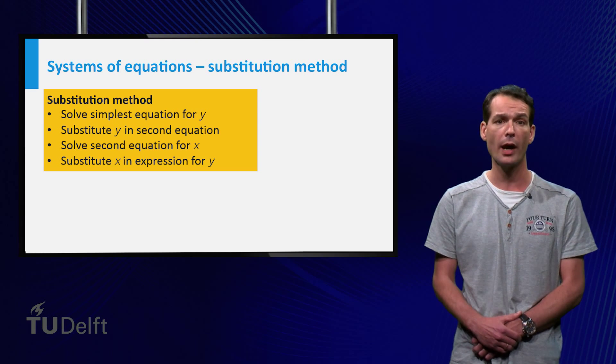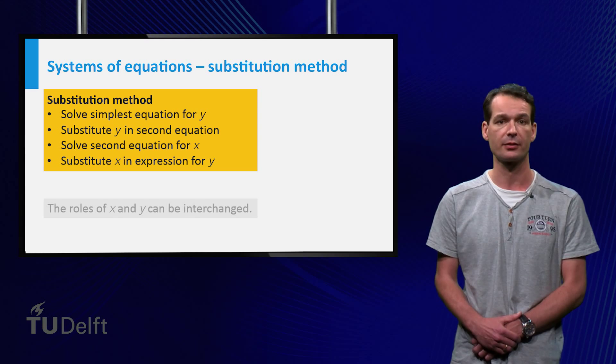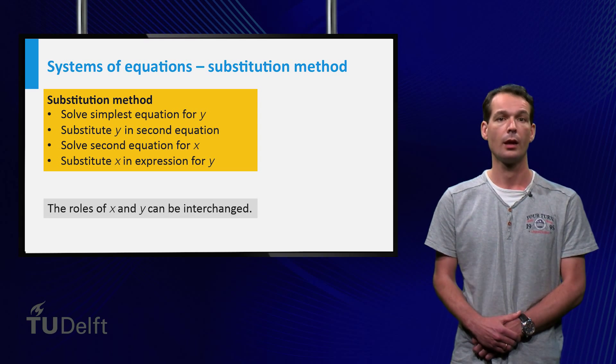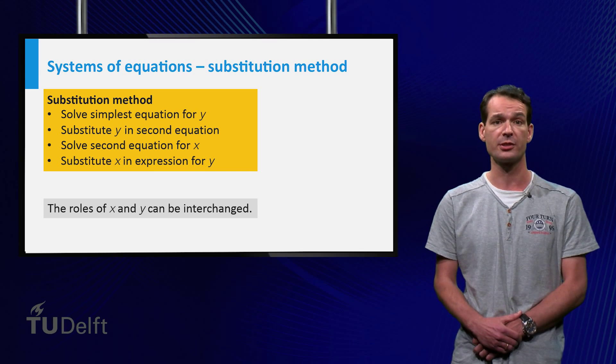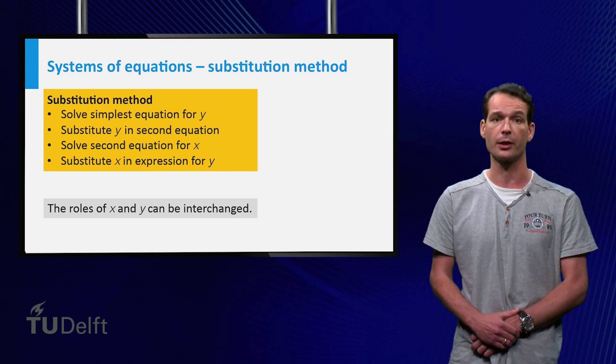Instead of first solving for y, you can also first solve for x. The substitution method is usually a good method to solve a system of two equations in two variables.